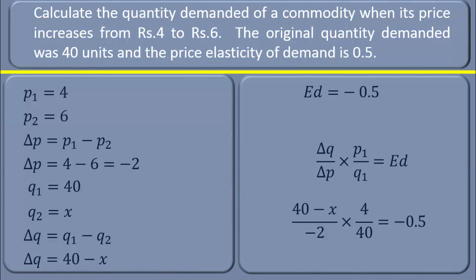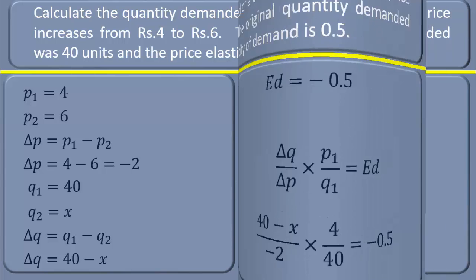We shall now substitute the values. Change in quantity 40 - x, change in price -2, multiplied by original price over initial quantity 4/40. That is equal to -0.5, the elasticity value.